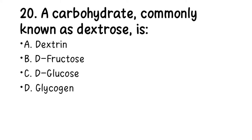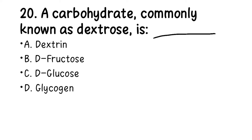Number 20. A carbohydrate commonly known as dextrose is: A. Dextrin, B. Fructose, C. Glucose, D. Glycogen. The right answer is C, glucose — specifically D-glucose. We have D-glucose and L-glucose, and D-glucose is more important to and more commonly found in the body.